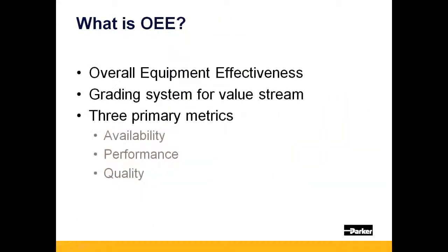OEE, simply stated, stands for Overall Equipment Effectiveness. It is a means of quantifying or grading a particular value stream's ability to produce a valuable good. Three different measures are often rolled up to arrive at the total OEE value. These measures are availability, performance, and quality.